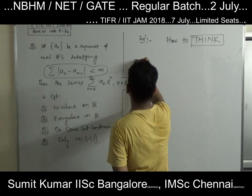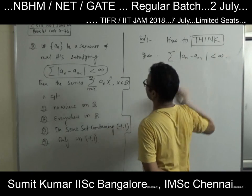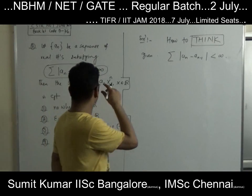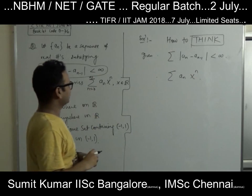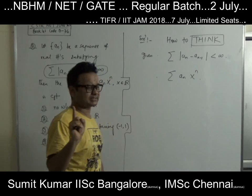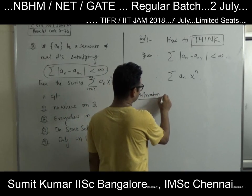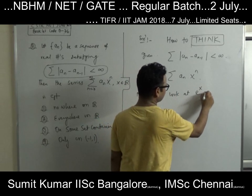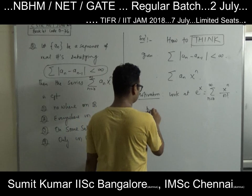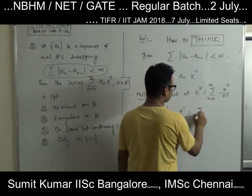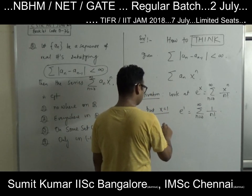What is given? We are given that this series converges, and the sequence of real numbers satisfies this condition. So, do I have some examples? For the first two options — nowhere on ℝ and everywhere on ℝ — do I have examples? The motivation is: look at e^x, which equals Σ xⁿ / n!. Put x equal to 1. Now I get e¹ = Σ from n=0 to infinity of 1/n!. This series converges, so take Aₙ = 1/n!.